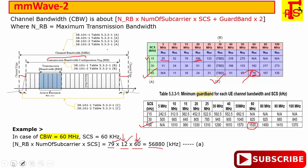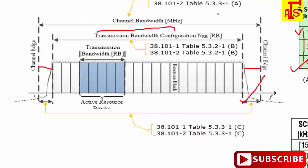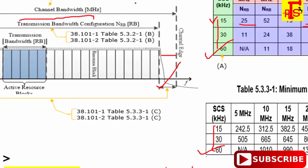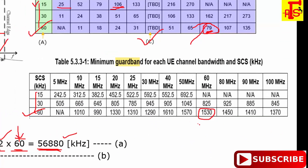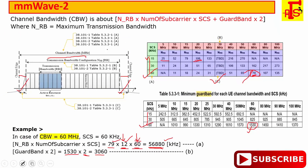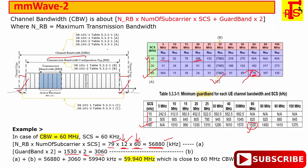That means the transmission bandwidth is approximately 56.8 MHz. For the guard band, there are guard bands on both sides. For 60 kHz subcarrier spacing, the guard band is 1,530 kHz × 2, which equals 3,060 kHz, or 3.06 MHz. Adding both parts together gives approximately 59.94 MHz, which is close to the 60 MHz channel bandwidth.